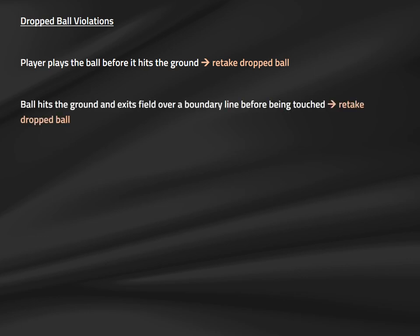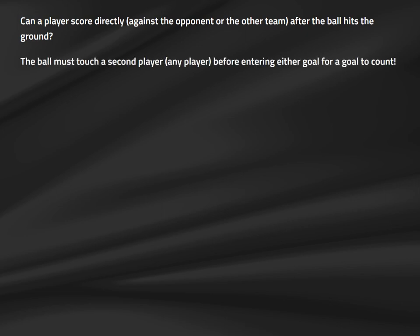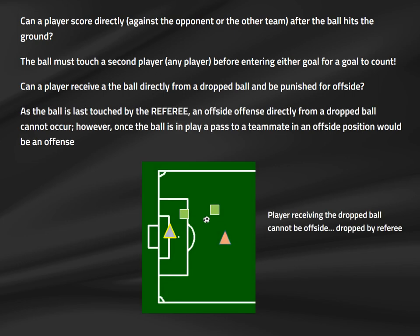If the field has an odd slope and the ball rolls over a boundary line before being touched, it should be re-dropped. Double touches do not occur on dropped balls — a player may take possession and dribble away. Can a player score directly from a dropped ball? No — the ball must touch a second different player before entering either goal. Regarding offside: a player may receive a dropped ball from an offside position, but once the ball is live and that player receives it from a teammate, offside should be called.